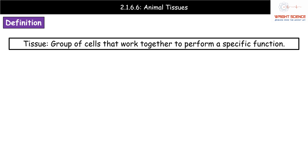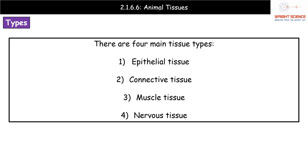First thing we need to do is understand the definition of the term tissue. Quite simply, it's a group of cells that work together to perform a specific function. We're going to look at four different types of animal tissues: epithelial tissue, connective tissue, muscle tissue and nervous tissue. These all crop up at different stages throughout the rest of your A-level biology course, giving you the foundations for future modules.